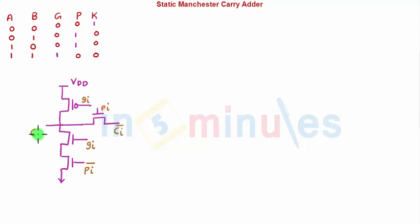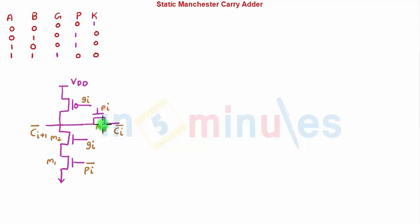The input going to the pass transistor is CI-bar, and the output is CI-plus-1-bar. Remember these are bar (inverted) signals. To summarize: there is a PMOS with the generate signal as its input, two NMOS in the pull-down network — one with the generate signal and one with PI-bar — and a pass transistor with input PI.